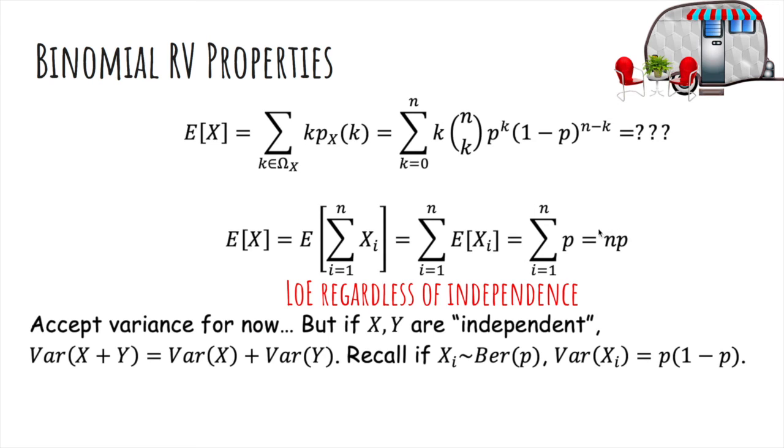We have to accept the variance for now, but remember the variance adds if they're independent, and the variance of a Bernoulli is p1 minus p, so the variance of the binomial will be n times that, because we added up n times.